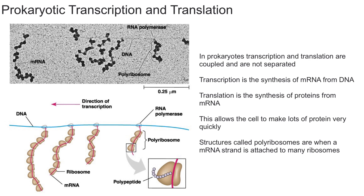Prokaryotes couple transcription and translation in order to make many proteins very quickly. Prokaryotes are single-celled and don't have organelles, so they don't have a separate nucleus. As a result, the area where you're making mRNA is essentially the same area as where the ribosomes are, so as you're making the mRNA, the ribosomes can attach to it and create proteins immediately.